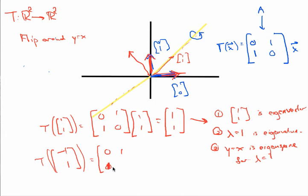Well, this is 0, 1, 1, 0 times the vector negative 1, 1. And what does that give me here? That's going to give me 0 times negative 1, 1 times 1, 1 times negative 1 plus 0. Okay, so this is also an eigenvector.